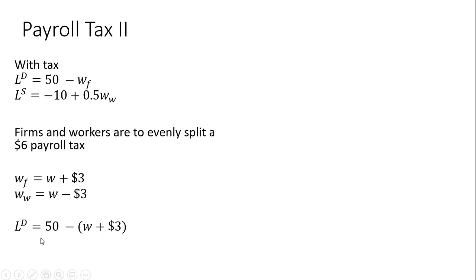So for labor demand, where I have W_F, I am now putting in W + 3, which simplifies to the following. And for labor supply, where I have the wages of workers, that's going to be the wage minus the $3 that the workers send to the government. So this would be the after-tax wage. Simplifying that equation, 0.5 times -3 is -1.5, add it to -10, we get -11.5.